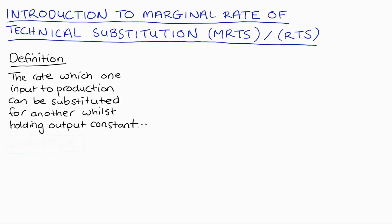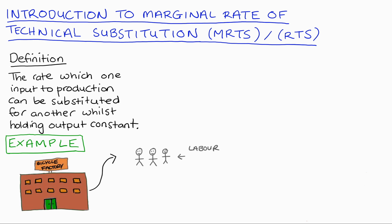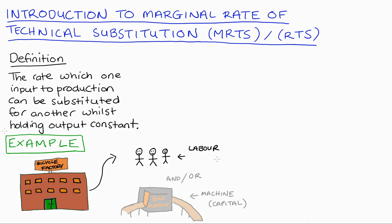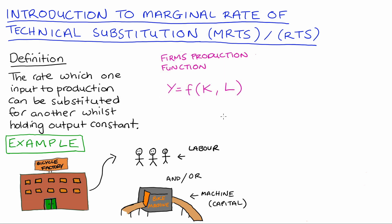To give an example, let's think about a factory that produces and packs bicycles. In our factory we can use labourers who assemble and pack bicycles manually, or we can get machines to do the work mechanically, or the work can be somewhat divided between the two methods. Abstractly, our firm's production function would be: output y — the number of packed bicycles — is a function of capital K (our machines) and labour L (our labourers).